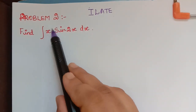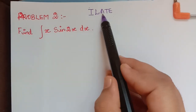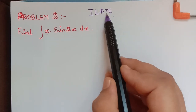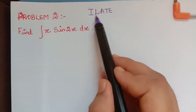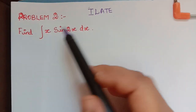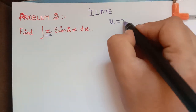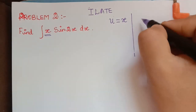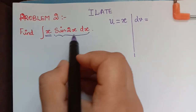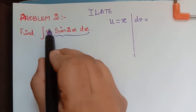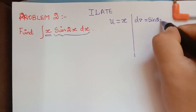Now if you see here, the functions are algebraic and trigonometric. Algebraic comes first and after that comes trigonometric, so we have to make the choice of u with what comes first. The first one is algebraic, so u will be equal to x. And dv will be equal to the remaining part, that is sin 2x dx.